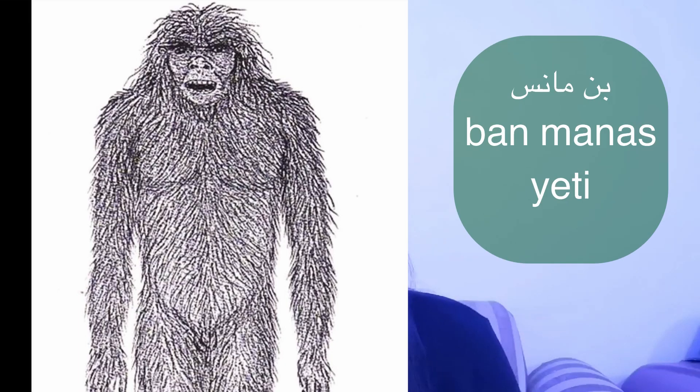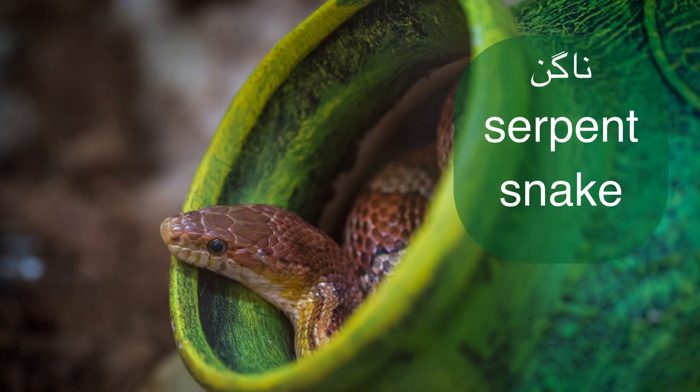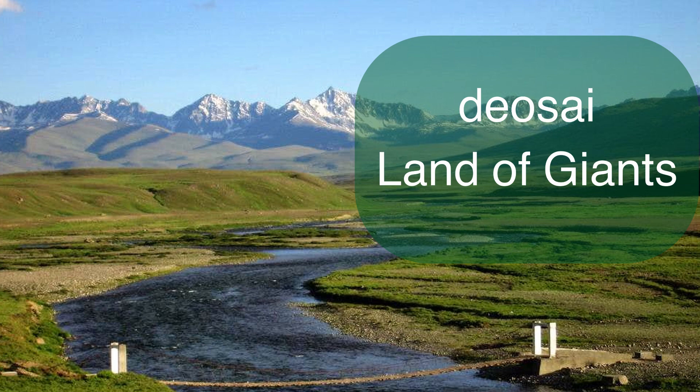Next we have another cryptid called 'Banmanas.' Banmanas is the local version of the Himalayan Yeti; the name comes from Sanskrit meaning 'men of the forest.' The next one is 'Nagin' — a female serpent, half human and half cobra, quite important in Buddhism, Hinduism, and Jainism. Finally, 'deo' means a giant. Deosai — a famous plateau in Pakistan — gets its name from 'deo,' as it was believed that giants lived there.